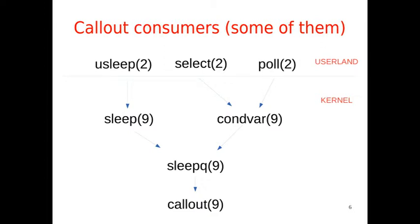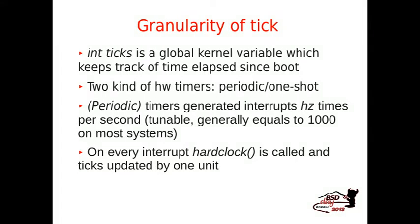This is a general picture. These are the services in userland that rely at a lower level in the kernel on some API or KPI, but at a lower level everything goes to the sink, which is callout, which is the general KPI that allows you to schedule functions. As I expressed before, the timeout which is passed to callout is expressed in terms of ticks.